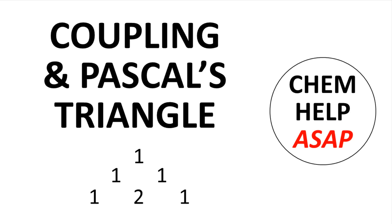Hello to you from ChemHelp ASAP. In simple systems, coupling patterns can be readily predicted through a mathematical relationship called Pascal's Triangle.